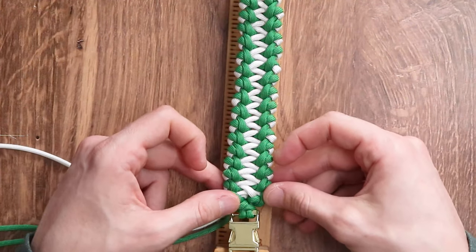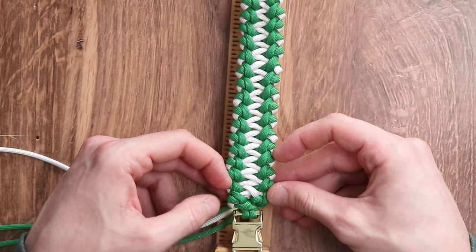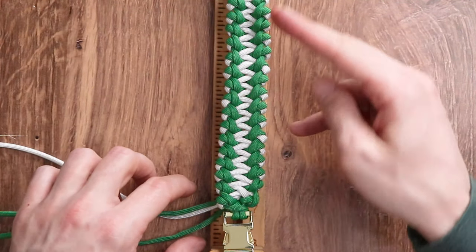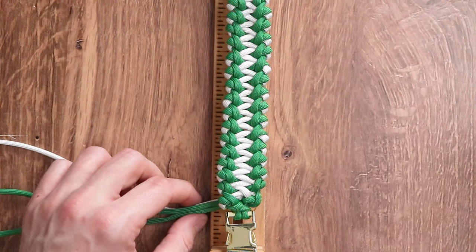So now that we have finished our leprechaun weave all the way down to the bottom, the only thing that is left is to take our bracelet off of the jig, cut off the excess paracord, and burn it down.